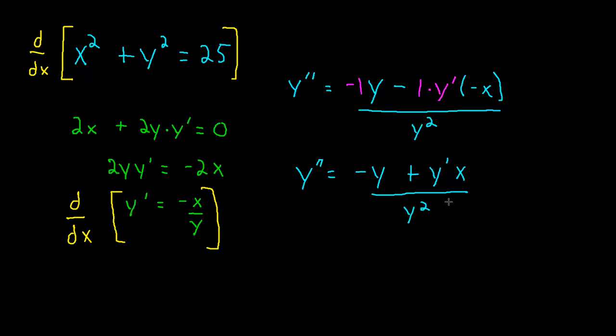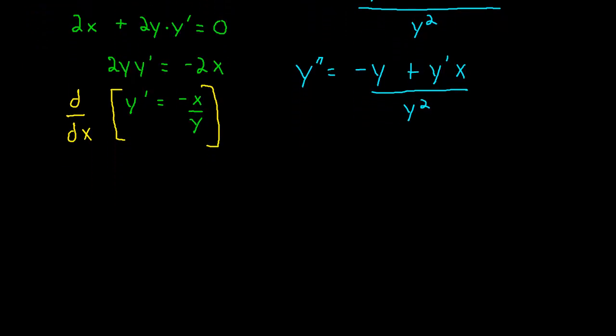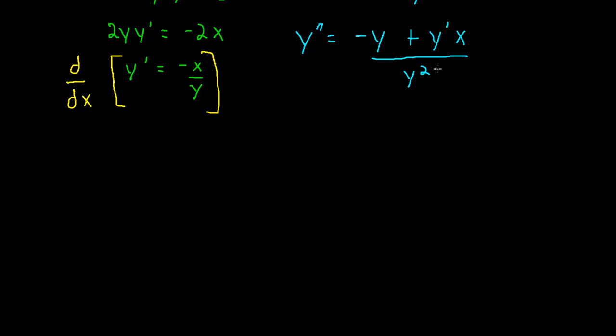Now you might think, well we're done. We found y double prime, we found the second derivative of y. But this is just too messy. Too many different things. We have a y double prime, we have a y, we have a y single prime, an x, just too many things going around. So it would be really nice if I could eliminate one of them. Do we know what that is? And the answer is yes, we do. We do know what it is because it was the first derivative right here. It's what we found first. So you can guess that we're going to make a little substitution here.